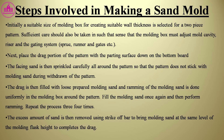Steps involved in making a sand mold: initially a suitable size of molding box is selected for a two-piece pattern, ensuring the molding box can accommodate the mold cavity, riser, and gating system. Next, place the drag portion of the pattern with the parting surface down on the bottom board. Facing sand is sprinkled around the pattern so the pattern does not stick to the molding sand during withdrawal. The drag is filled with loose prepared molding sand and rammed uniformly. Fill and ram the sand 3–4 times, then use a strike-off bar to level the sand to the flask height to complete the drag.